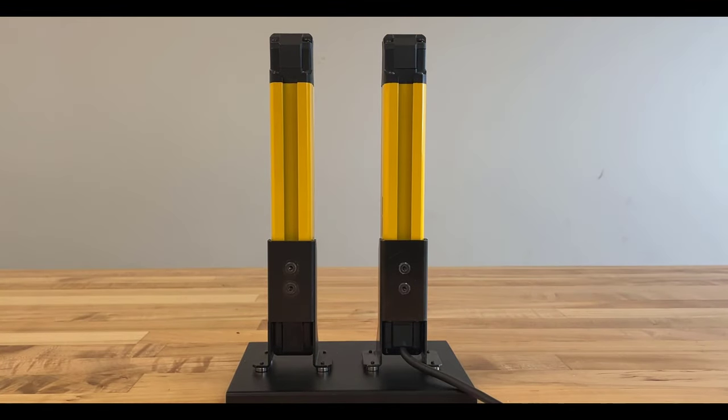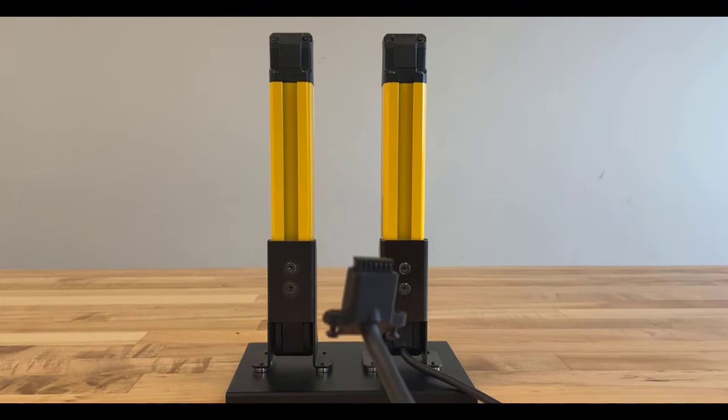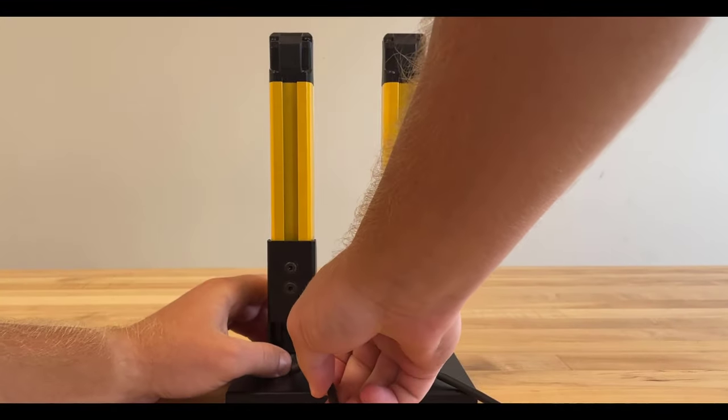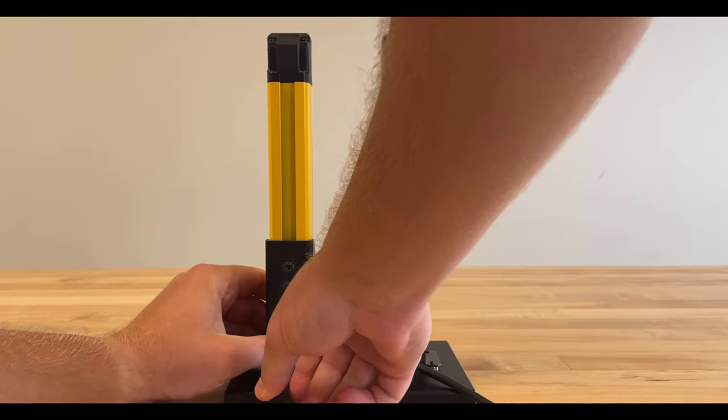Again, locate the long side of the connector to be pushed up against the back side of the light curtain transmitter stick. Insert that cable.